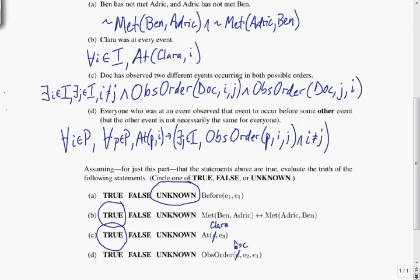And then ObsOrder(Doc, E2, E1), well the only thing we know about ObsOrder is this and this. This says that if you were at some event, then you observe that event happening before some other event, but we don't know that Doc was at any particular events. We know he's observed two different events occurring in both possible orders, but we don't know that those events are E2 and E1. If these were universals, we'd know he observed every pair of events in both possible orders, every distinct pair, every pair that was unequal. This would also have to be an implication in that case, but we don't know that. So we don't know whether this is true or false, so it is also unknown.